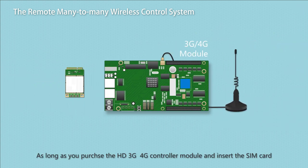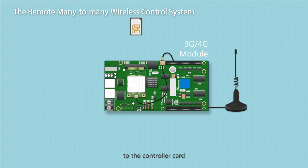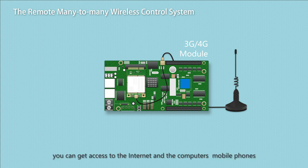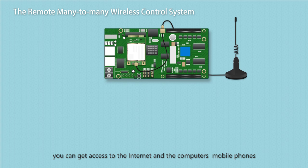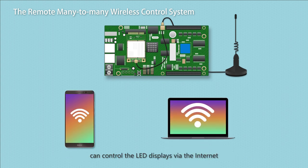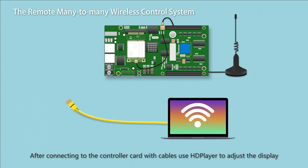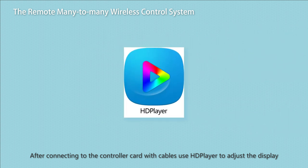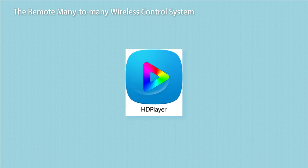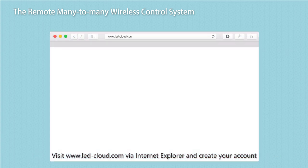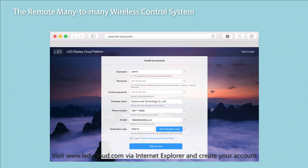As long as you purchase the HD 3G/4G Controller Module and insert the SIM card into the controller card, you can get access to the Internet and computers or mobile phones can control the LED displays via the Internet. After connecting to the controller card with cables, use HD Player to adjust the display.